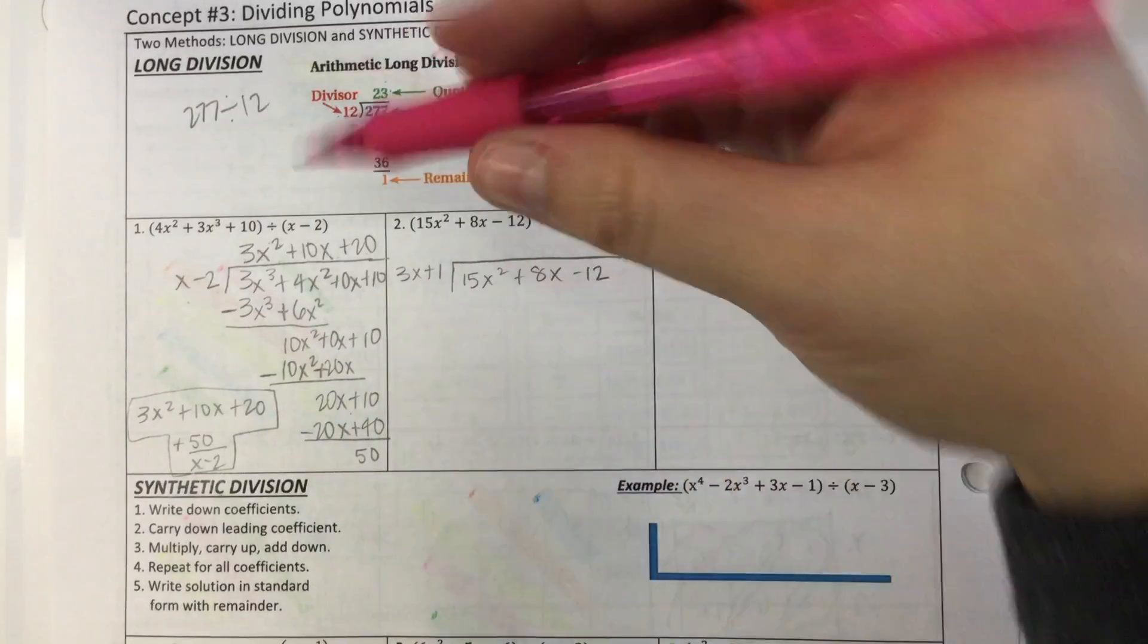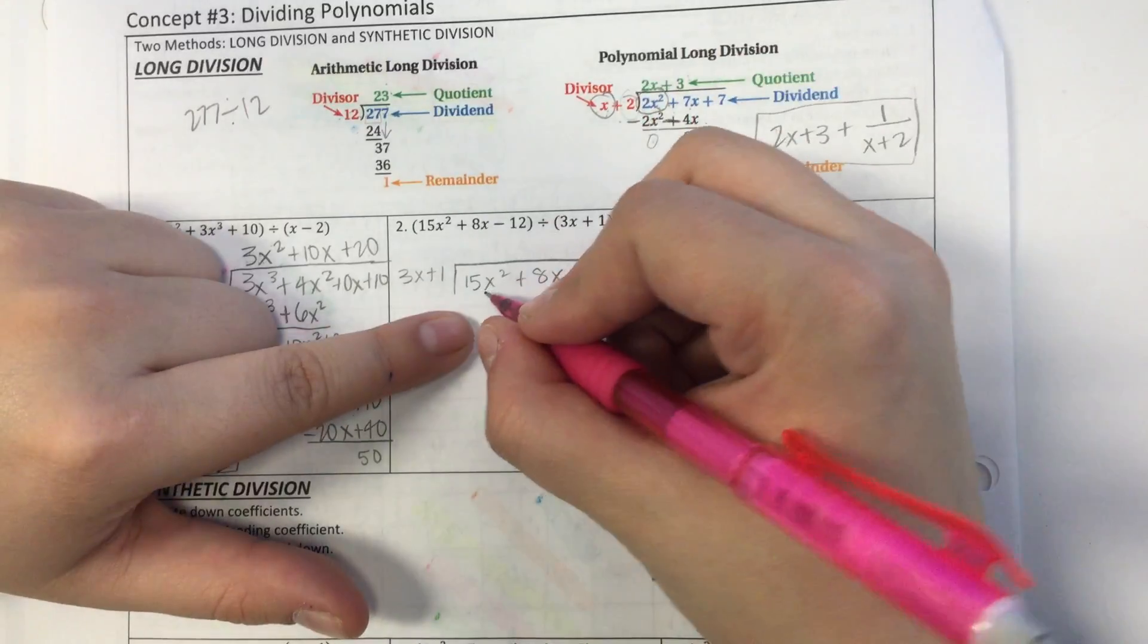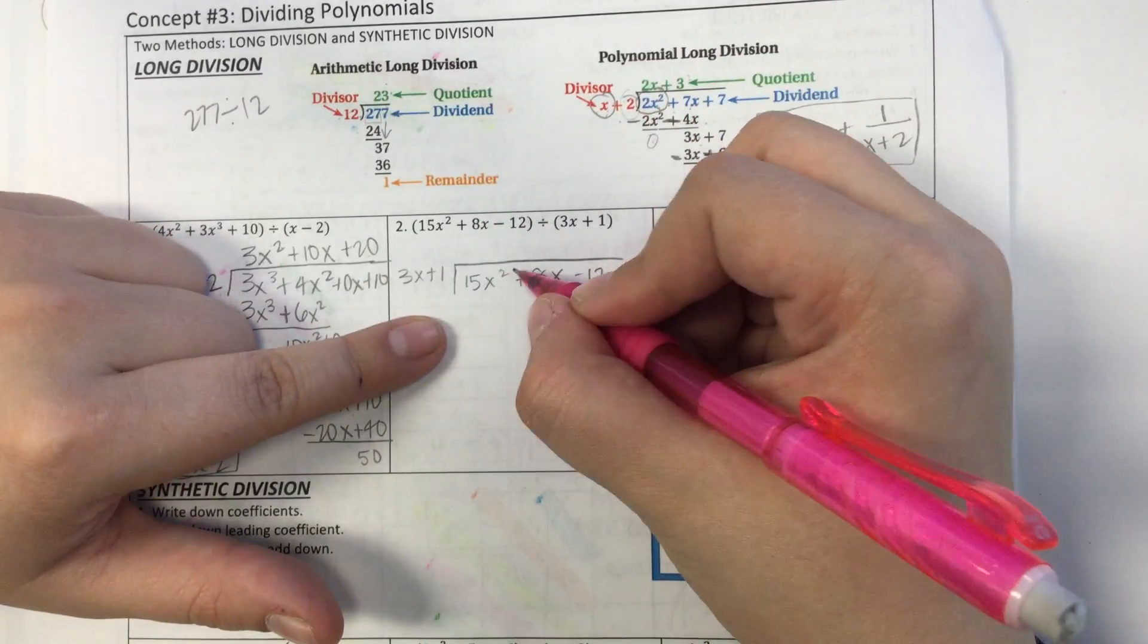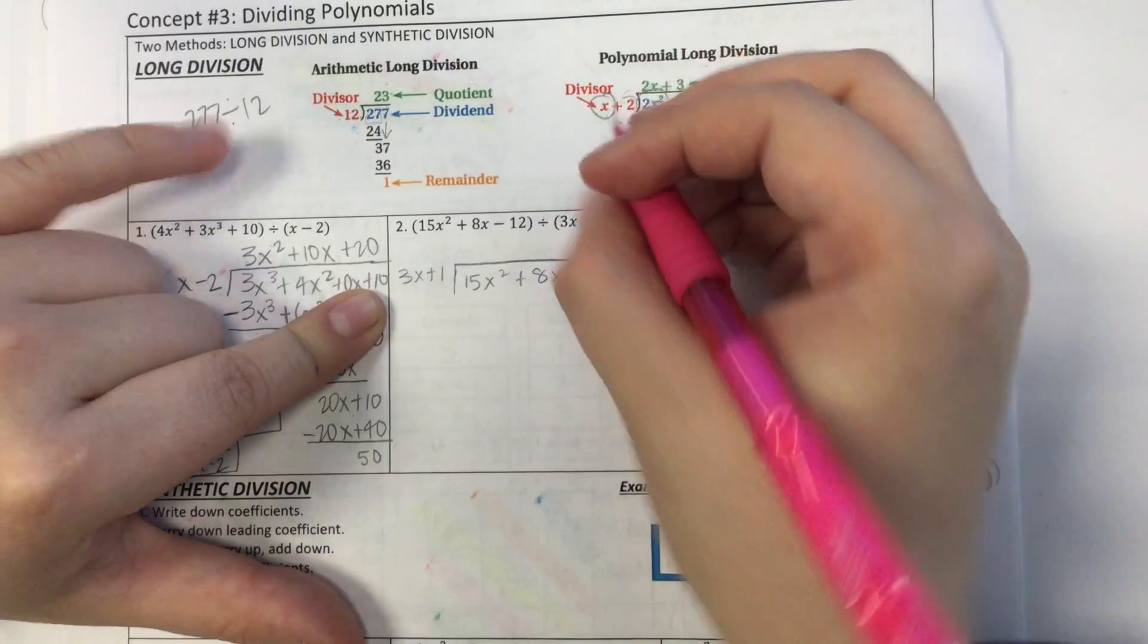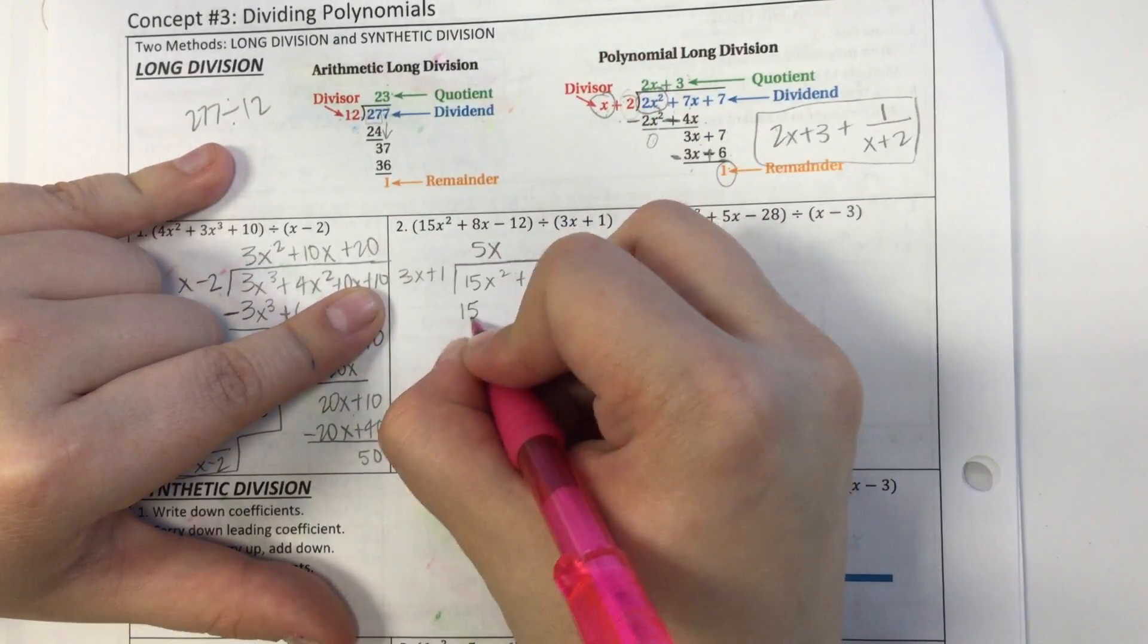Alright, let's get started. Well, 3x times 5x will give me 15x squared. So another way you can do this is 15x squared divided by 3x gives me 5x. And then that would give me 15x squared.